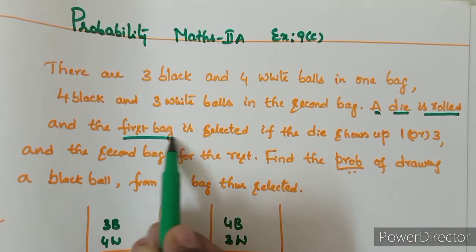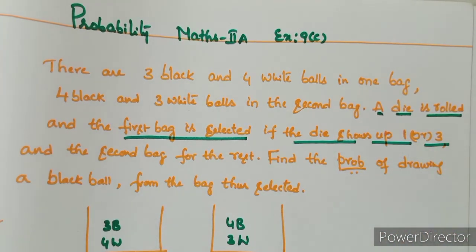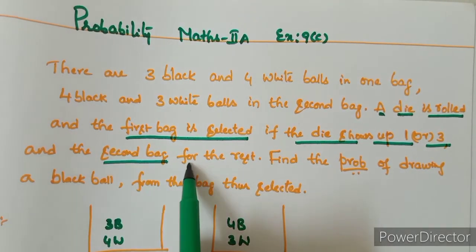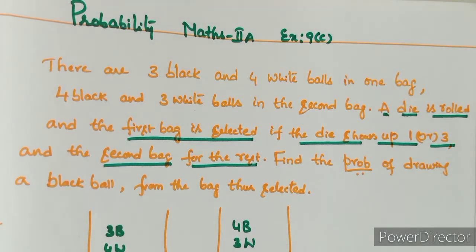If the die shows 1 or 3, the first bag is selected. If the die shows 2, 4, 5, or 6, the second bag is selected. Find the probability of drawing a black ball from the bag thus selected.